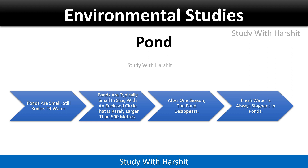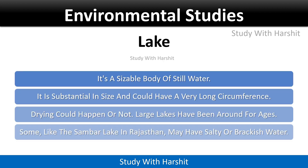Ponds are typically small in size with an enclosed circle that is barely larger than 500 meters. After one season the pond may disappear. Fresh water is always stagnant in a pond. A lake is a sizable body of still water, substantial in size.